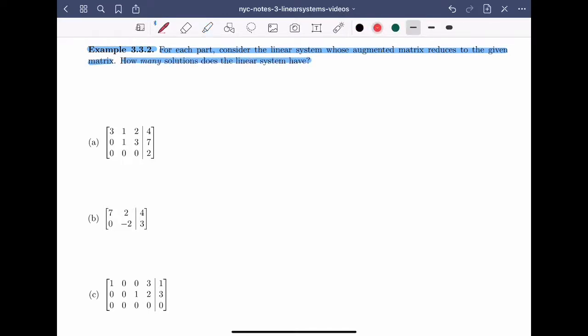We'll start by looking at the first matrix. The first thing that I want to do is look and say, look at the leading entries. So I have a 3, a 1, and a 2. And oh, I noticed that 2 is a leading entry, and it's in the constants column.